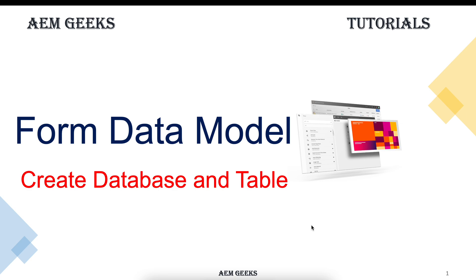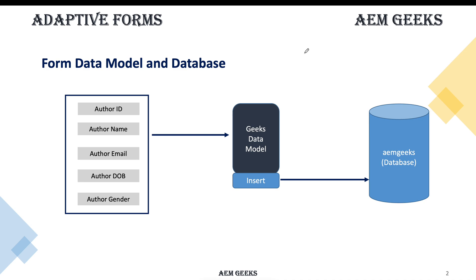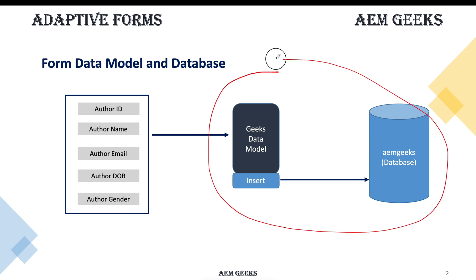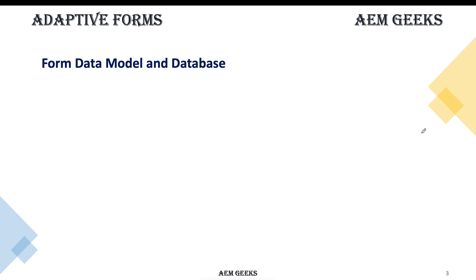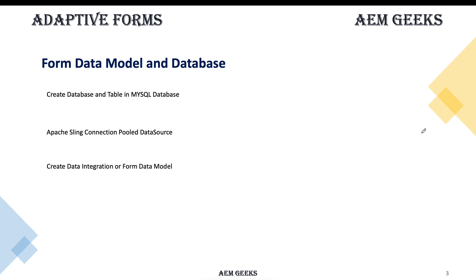In this tutorial I'll talk about how to create a form data model or data integration. I'll create a database and tables in MySQL, configure Apache Sling connection pool, create a data integration form data model, and then create services to test that data model.